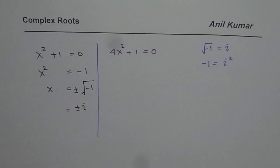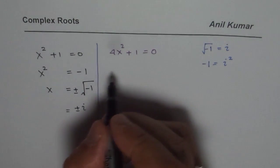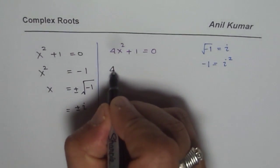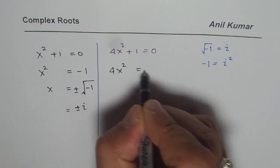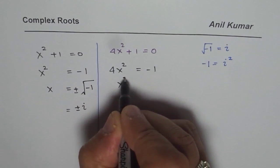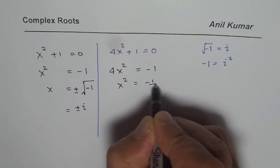You can pause the video, answer the question, and here is my solution. So in this particular case, we will do as we did earlier, we will have 4x² equals to minus 1, x² equals to minus 1 over 4.